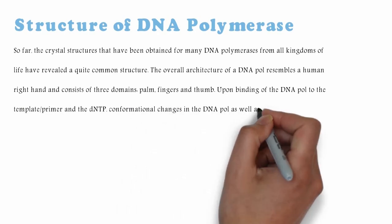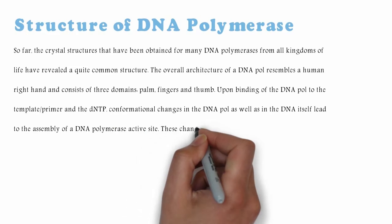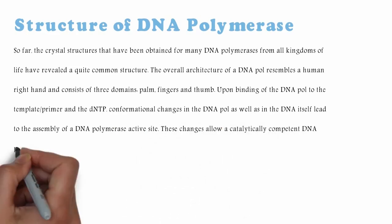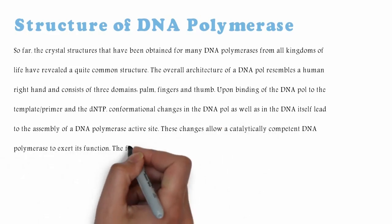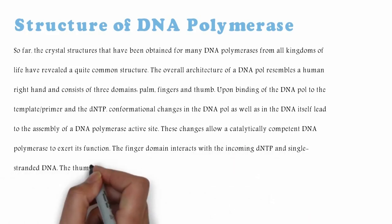Upon binding of the DNA pole to the template or primer and the dNTP, conformational changes in the DNA pole as well as in the DNA itself lead to the assembly of a DNA polymerase active site.